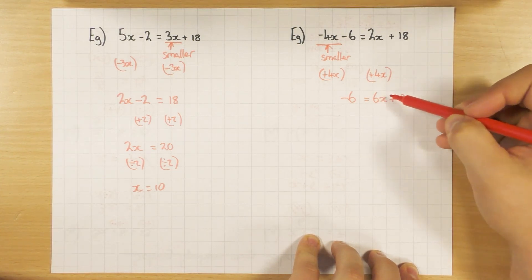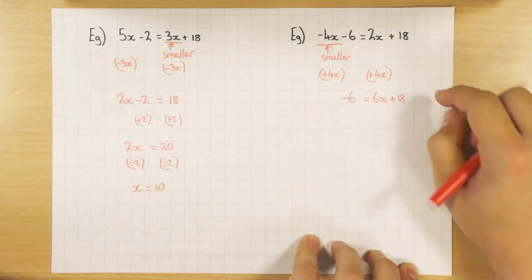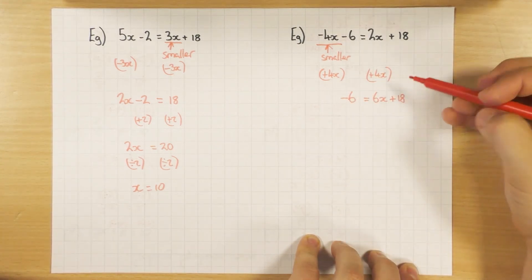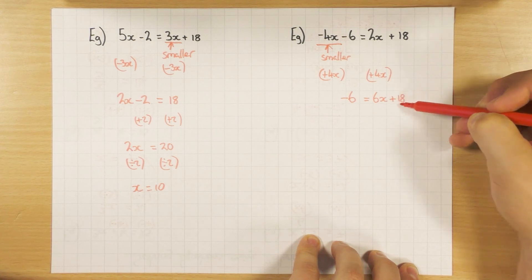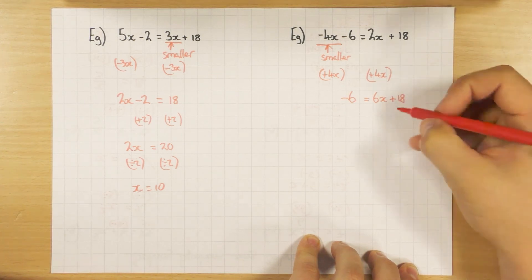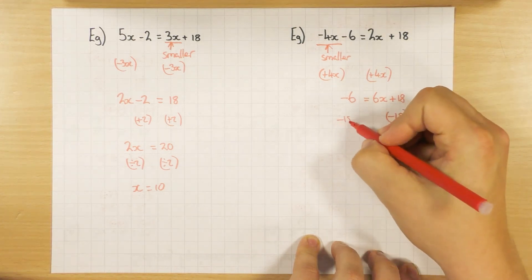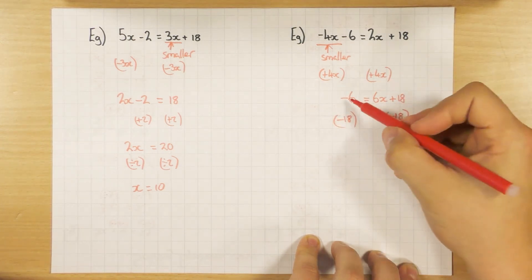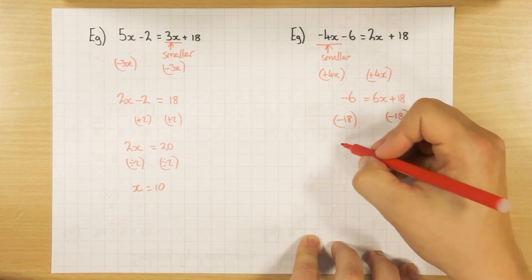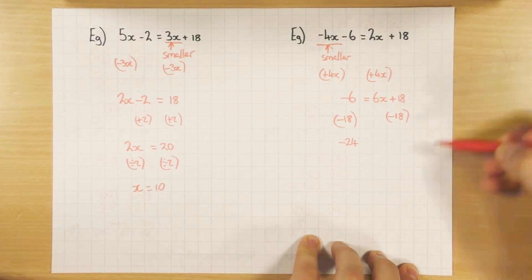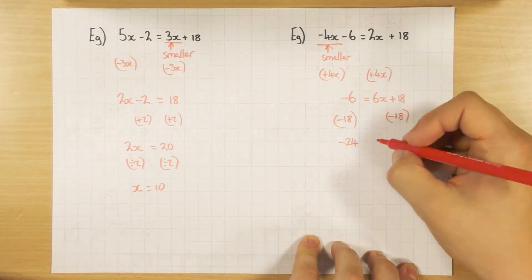Either way, the steps are the same. I want to get rid of that number. I want to get rid of 18. So I'm going to take away 18 from both sides. Well, minus 6 take away another 18. That's going to be minus 24. I'm on minus 6. I go down another 18. I'm going to be on minus 24. That equals 6x.